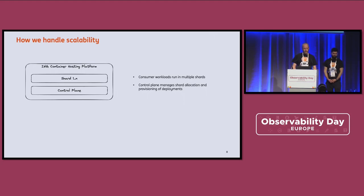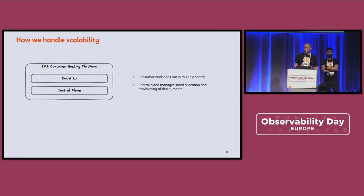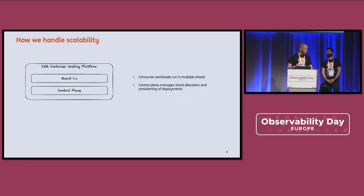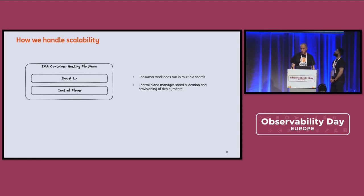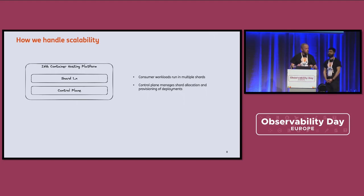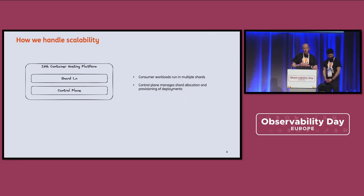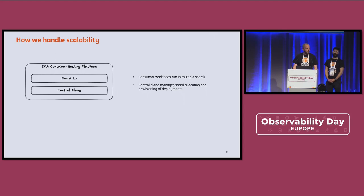If you look at how we handle scalability, we went the sharding route, because each computer system has limits — an egress interface can have a bandwidth limit, a cluster might have limits, even a metric store might have an upper limit. To overcome those limits, we shard. We have the ING container hosting platform in a Kubernetes environment where we create namespaces, and we have a control plane responsible for allocating workloads. This can be done with a placement policy — either pinning a team to a specific shard or using the least-used shard available.